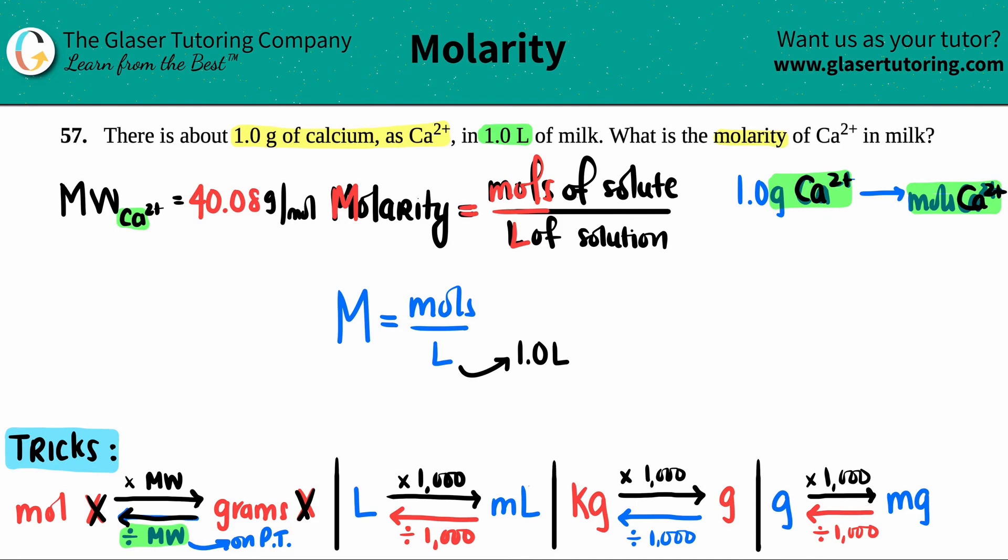Going back to the problem, I have one gram, so I'm at grams. I got to go to moles. So I take my gram value and divide by the molecular weight. I got 1.0 grams of calcium and I divide by the molecular weight, 40.08 grams per mole.